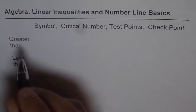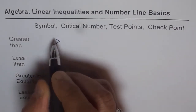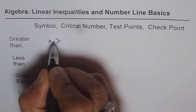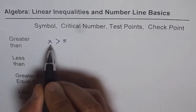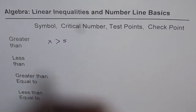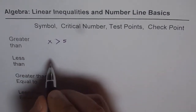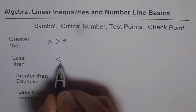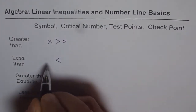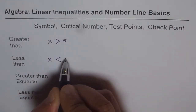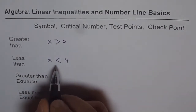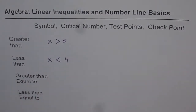These have symbols. The greater than symbol has the bigger end opening to the left. For example, if I say x is greater than 5, then x is the set of all numbers greater than 5 — for example, 6, 7, 8, and so on. The less than symbol is narrower on the left. So we can say x is less than 4, and all numbers less than 4 form the solution set for this inequality.